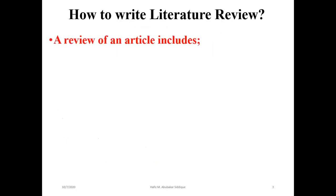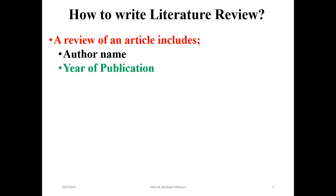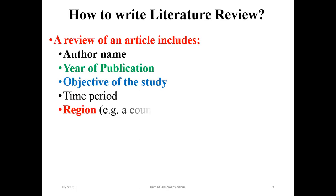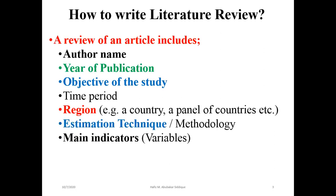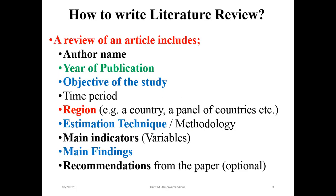When we review literature, which are the steps involved in it? Especially when we write about theses, there is the author's name, year of publication, what was published in the year of the paper. After that, what was the objective of the study, what was the time frame, what was the country or panel of countries, or a cross-sectional study — we have to define it. After that, what is the main methodology, we have to explain it. The main indicators or main variables, we have to explain them. At the end, the main findings. The last point is optional — any requirements or suggestions are also noted.